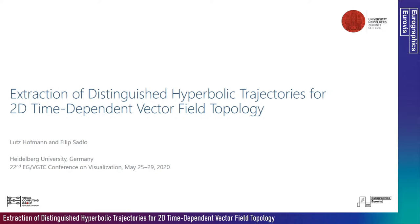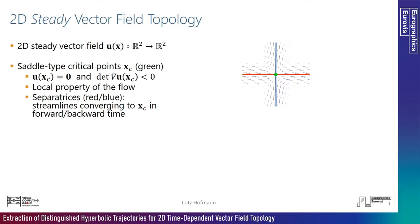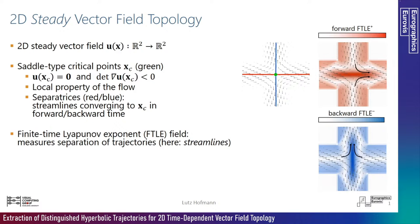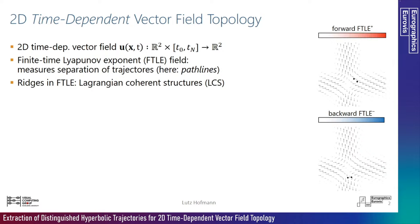Hello everyone. This is Lutz Hoffmann from the Visual Computing Group at Heidelberg University. I will talk about our work on the extraction of distinguished hyperbolic trajectories for 2D time-dependent vector field topology. A 2D steady vector field assigns a velocity to each point in a two-dimensional domain. Its topology is defined by saddle-type critical points — locations of vanishing velocity where the Jacobian has positive and negative real eigenvalues. Streamlines converging to these saddle-type critical points in forward or backward time are called separatrices, as they separate the domain into regions of similar flow behavior. The finite-time Lyapunov exponent (FTLE) can also measure streamline separation; in the steady case, ridges in the forward and backward FTLE fields intersect at saddle points and are consistent with separatrices.